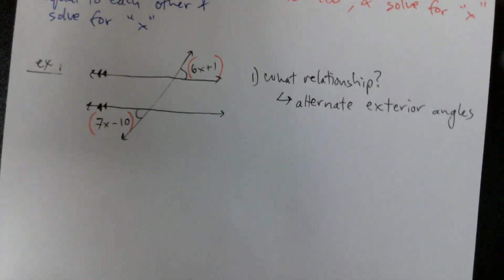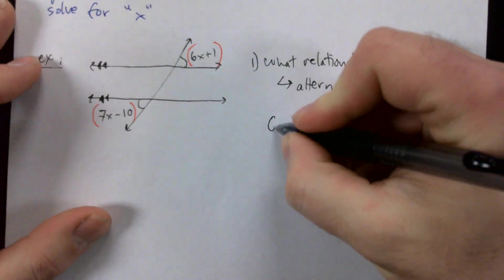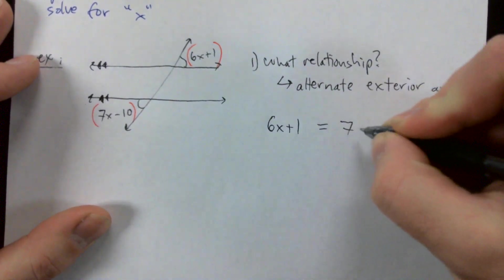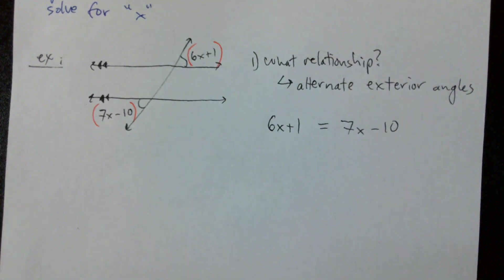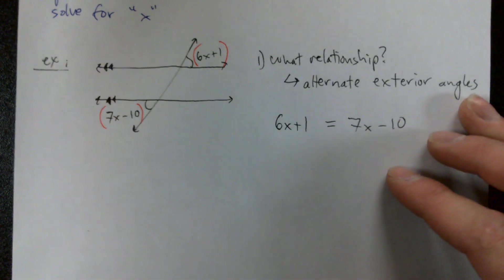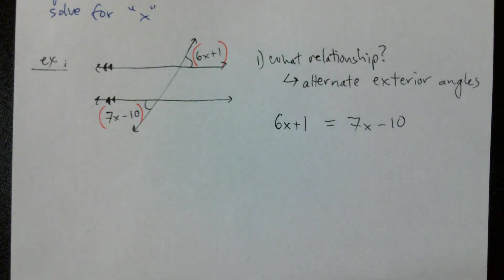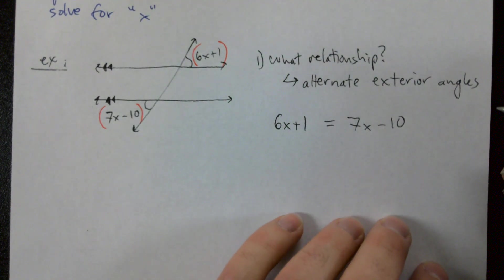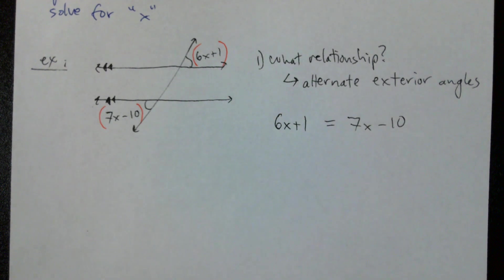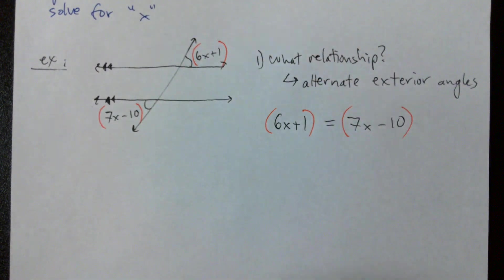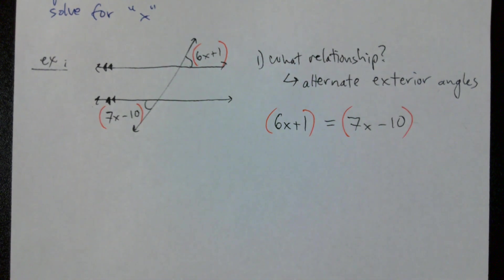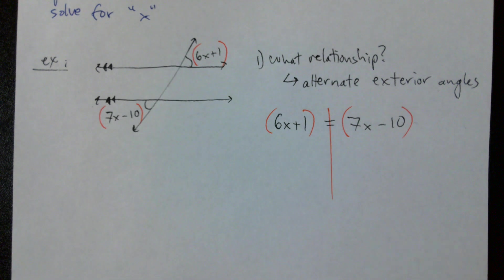Very straightforward. All we're going to do is set 6x plus 1 equal to 7x minus 10. So we set them equal to each other and now we just have to solve for x by doing our inverse operations. We'll split the equal sign down the middle.